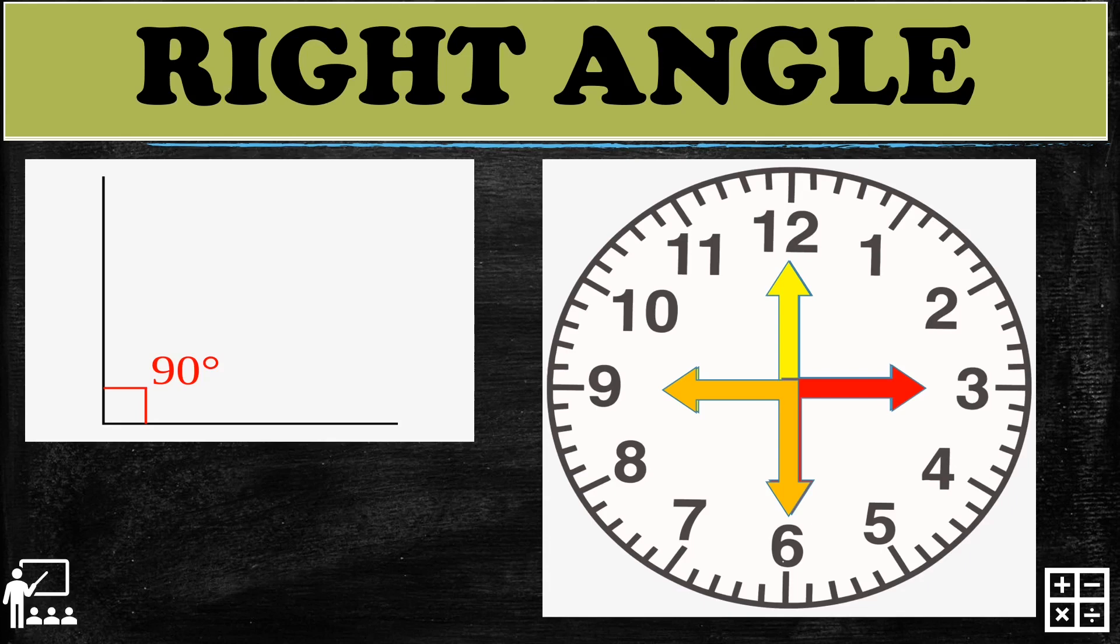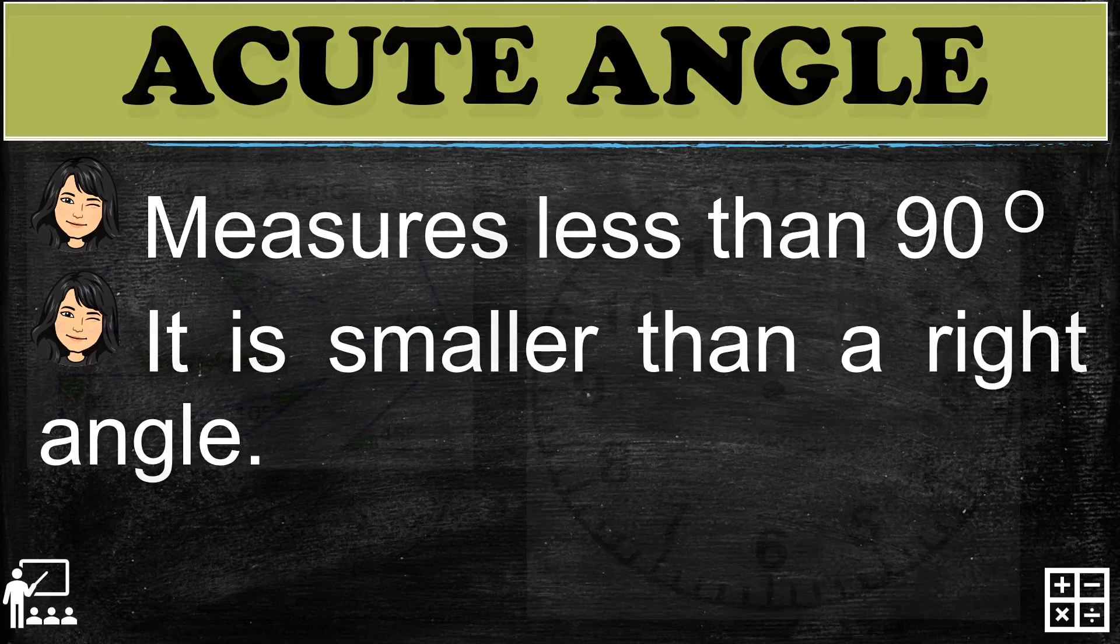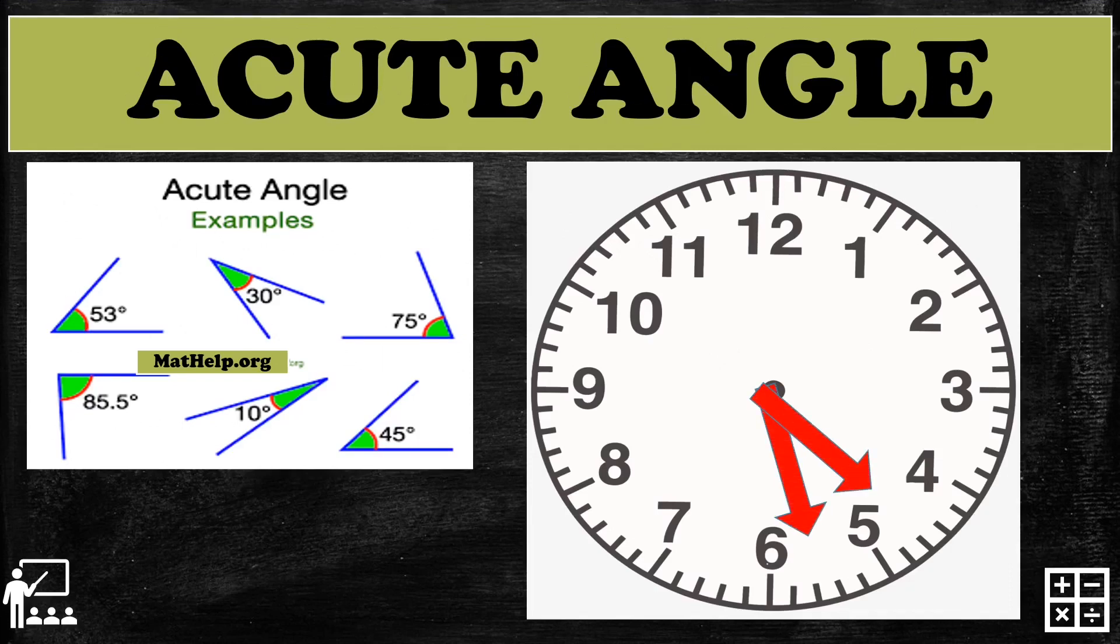Next is acute angle. Acute angle measures less than 90 degrees and is smaller than a right angle. In my left corner there are some acute angle samples: 53 degrees, 30 degrees, 75 degrees, 85.5 degrees, and 45 degrees. To understand this, I'll use a clock where the hands represent the two rays.